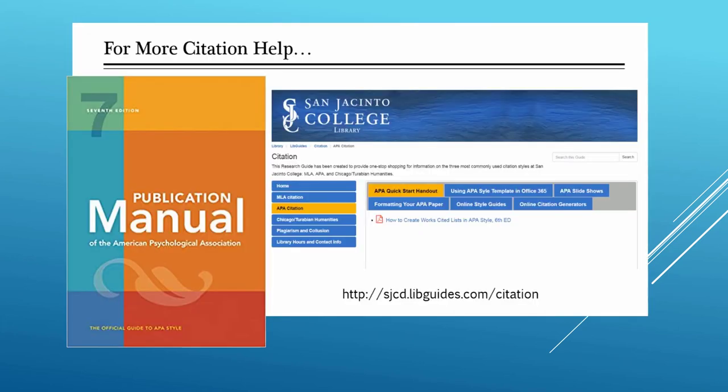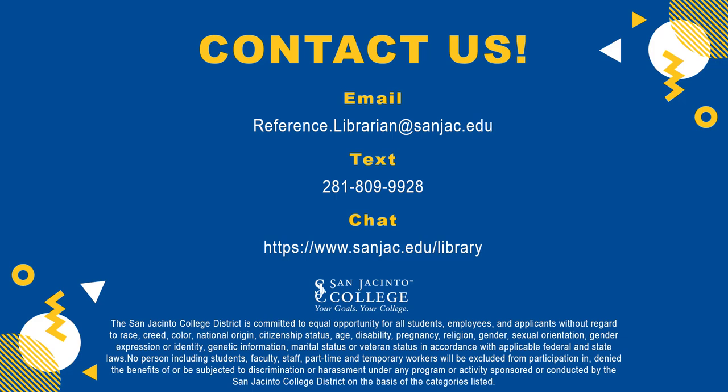For more citation help, see the Publication Manual of the American Psychological Association, 7th edition, at any library reference desk or on reserve at your campus library. Also, check out our citation research guide. San Jacinto College librarians are always willing to help — just ask a librarian!